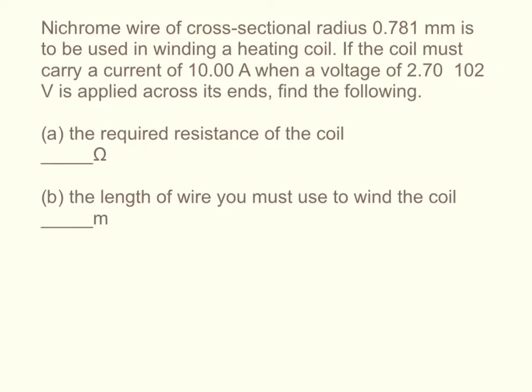So we have four pieces of information. We have a material, we have a radius, we have the current, and the last thing we have is the voltage. And we are supposed to find out the resistance and the length.